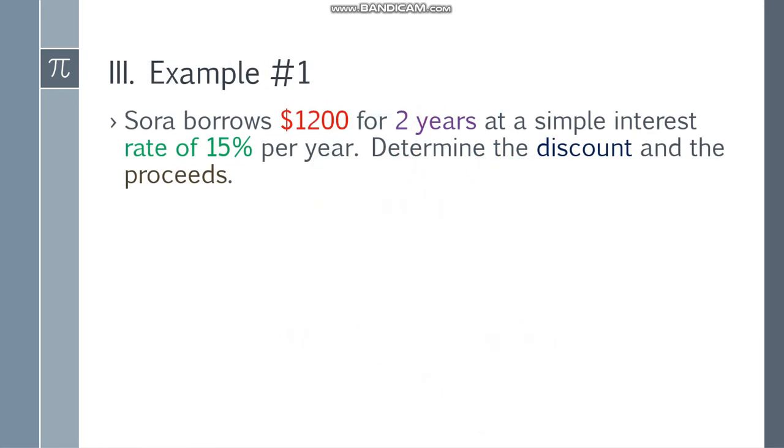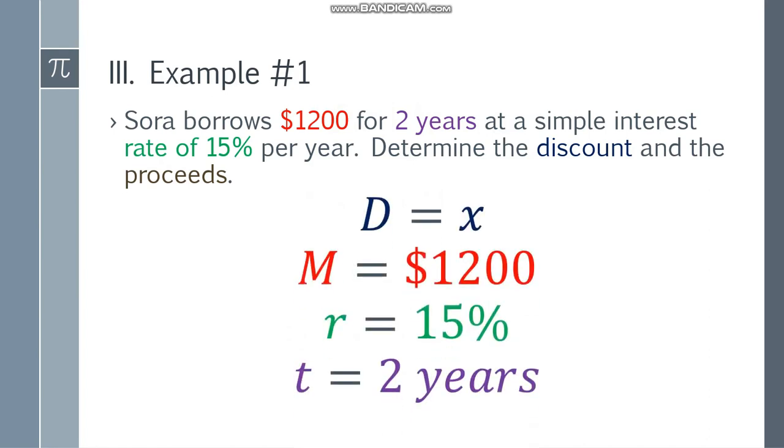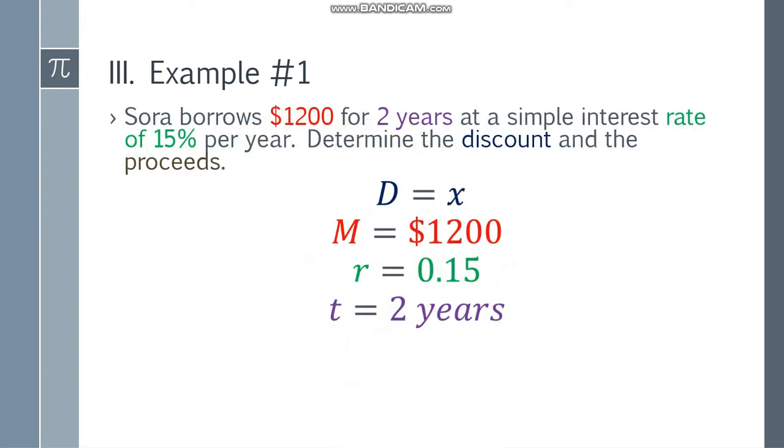Let's have the first example. Sora borrows $1,200 for two years at a simple interest rate of 15% per year. Determine the discount and the proceeds. From the given, the discount is unknown, so X. Maturity value is $1,200, R is 15%, and T is two years. Change 15% to 0.15 in decimal form. Since our time is already in years, we're good to go.